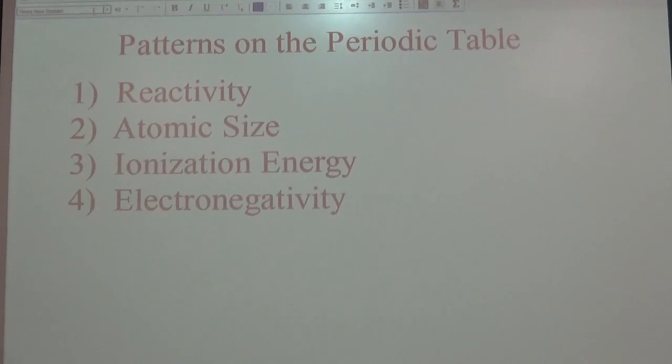Everything within a group tends to have similar characteristics. So the four big patterns that we look at in first-year chemistry are these four that you see on the board: reactivity, atomic size, ionization energy, and electronegativity. Each of these has a trend based on the type of element that we are looking at.